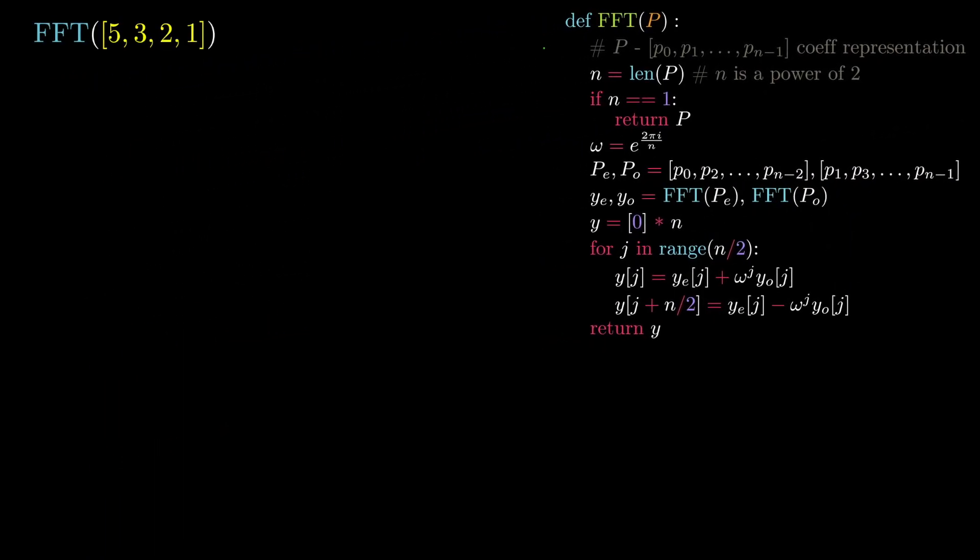Suppose I provide the following input to the FFT function, which represents a degree 3 polynomial. We first define n is equal to 4. This does not meet the base case criteria, so we proceed to define omega as e to the power of 2πi over 4, which is equivalent to the complex number i.